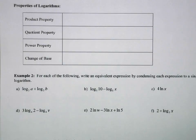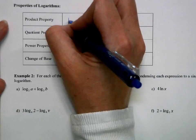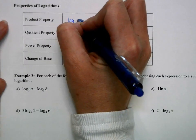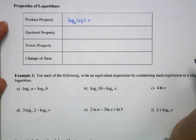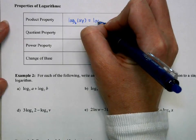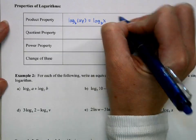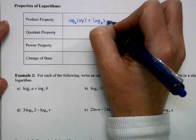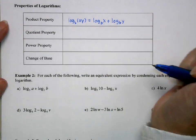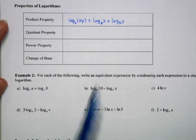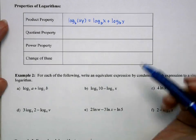Now logarithms have some other properties, and these all come from our properties for exponents, because a logarithm is really an exponent. So with my product property, if we have the log of a product, so log of something times something, we can expand that using the product property to log base b of x plus log base b of y. It doesn't multiply here, it adds, because again, just rules of exponents.